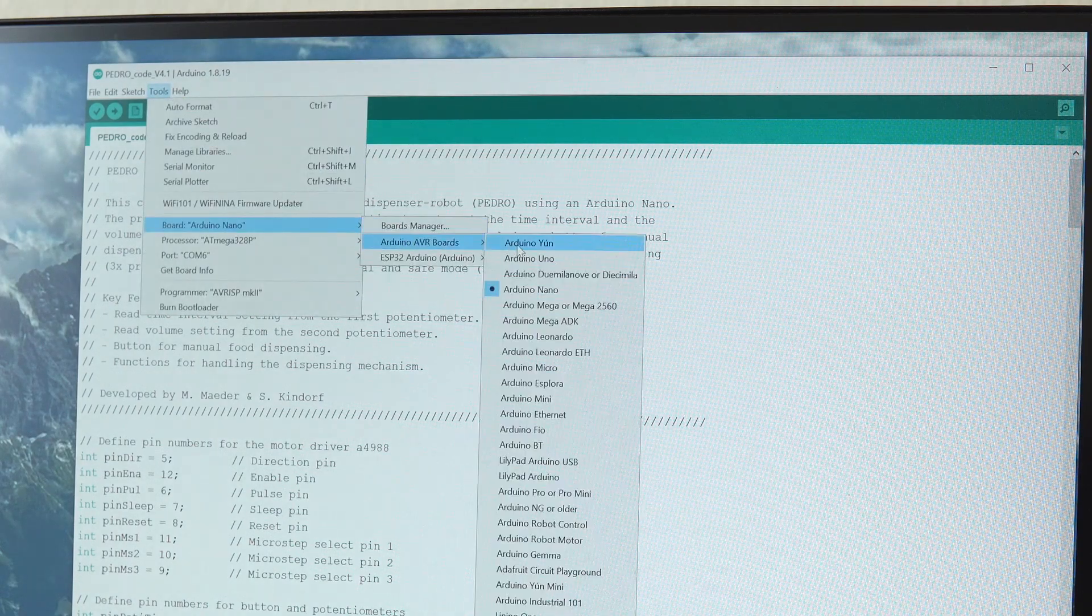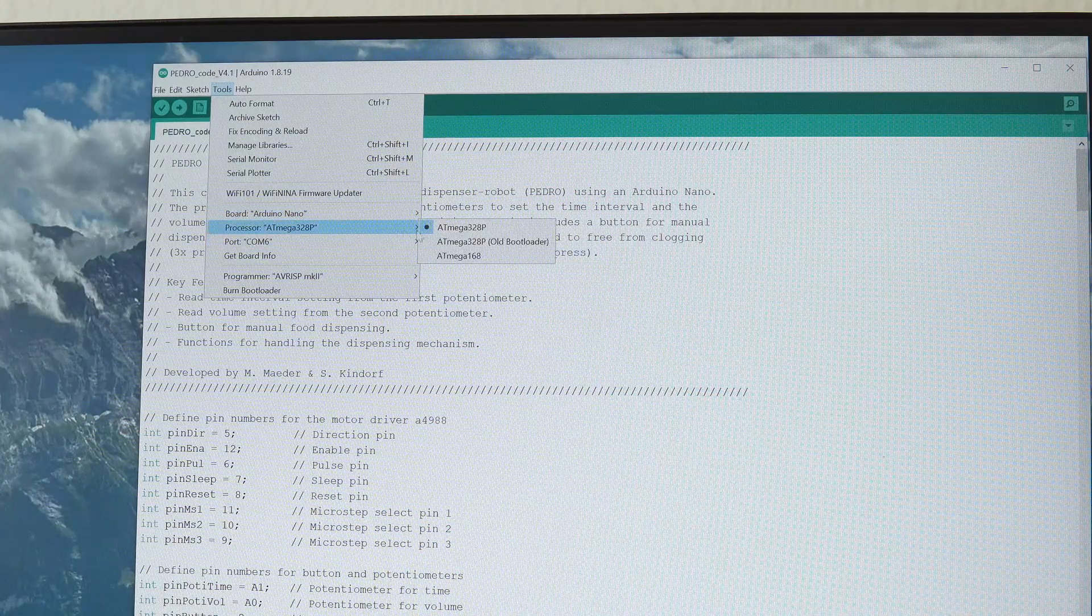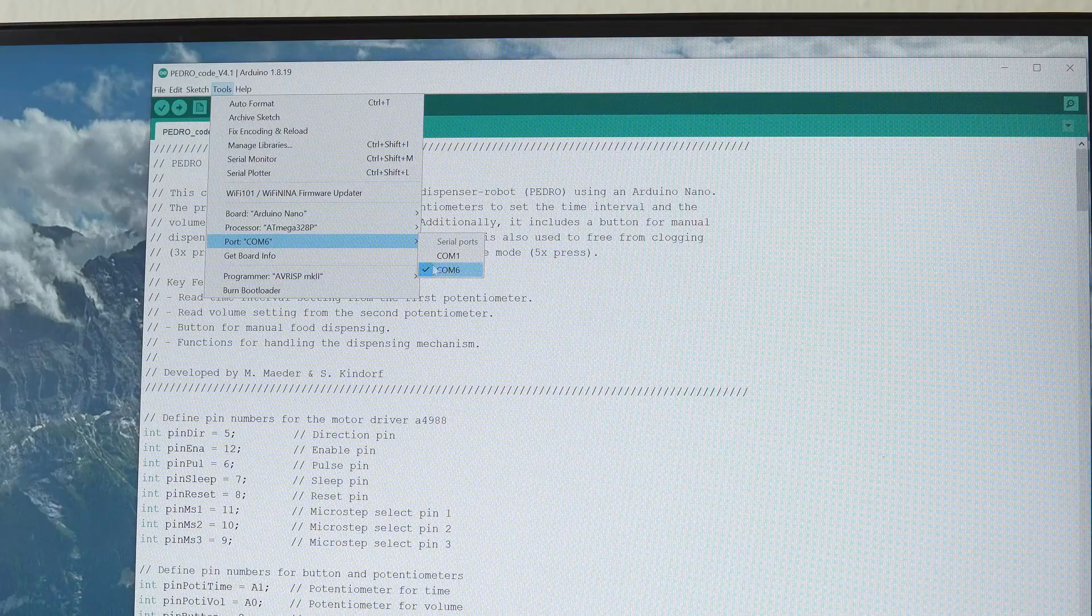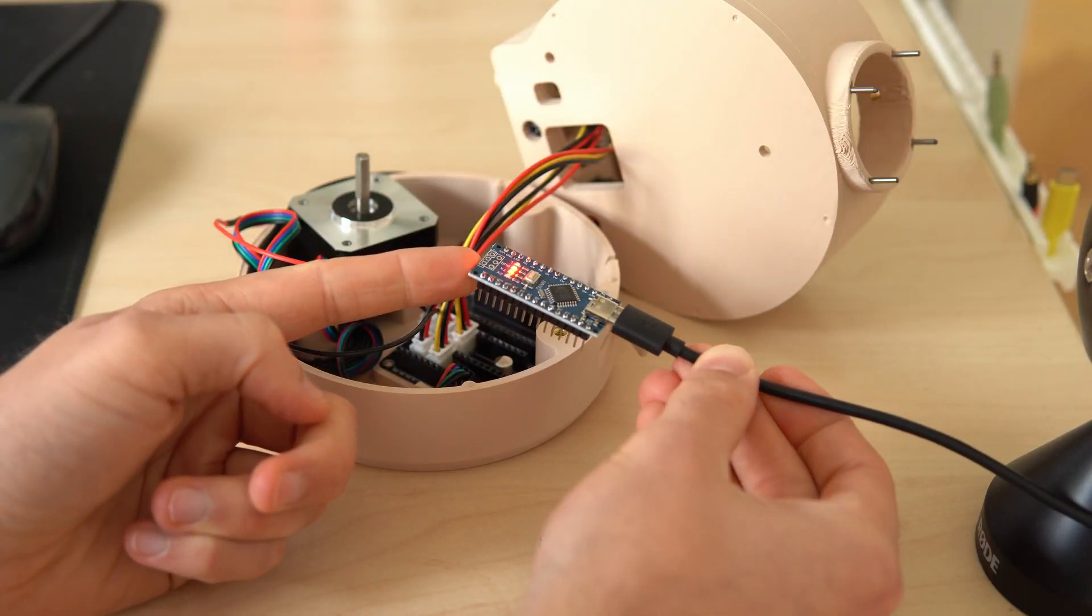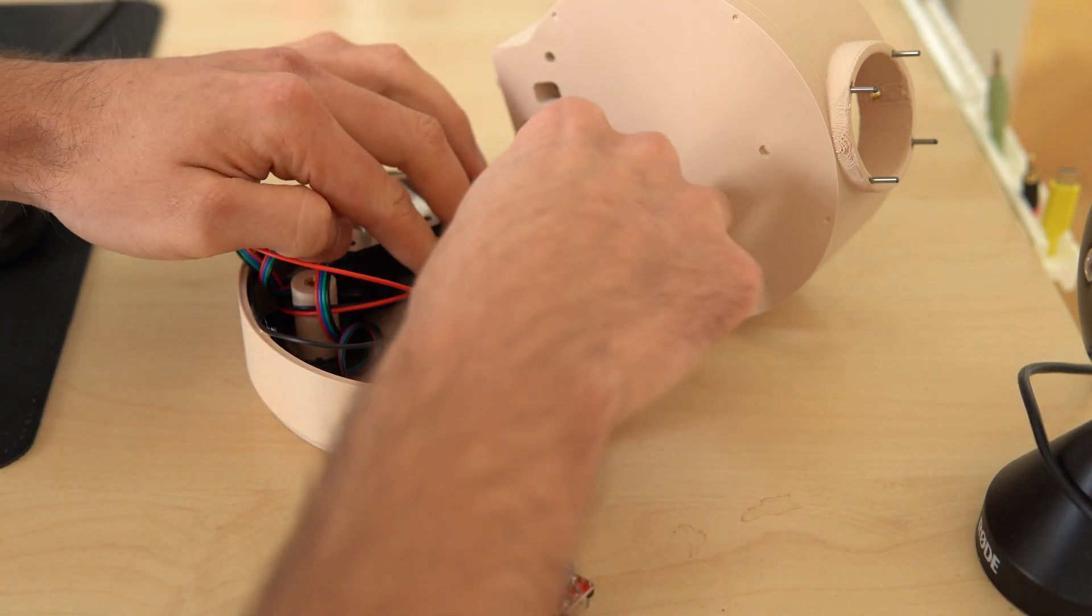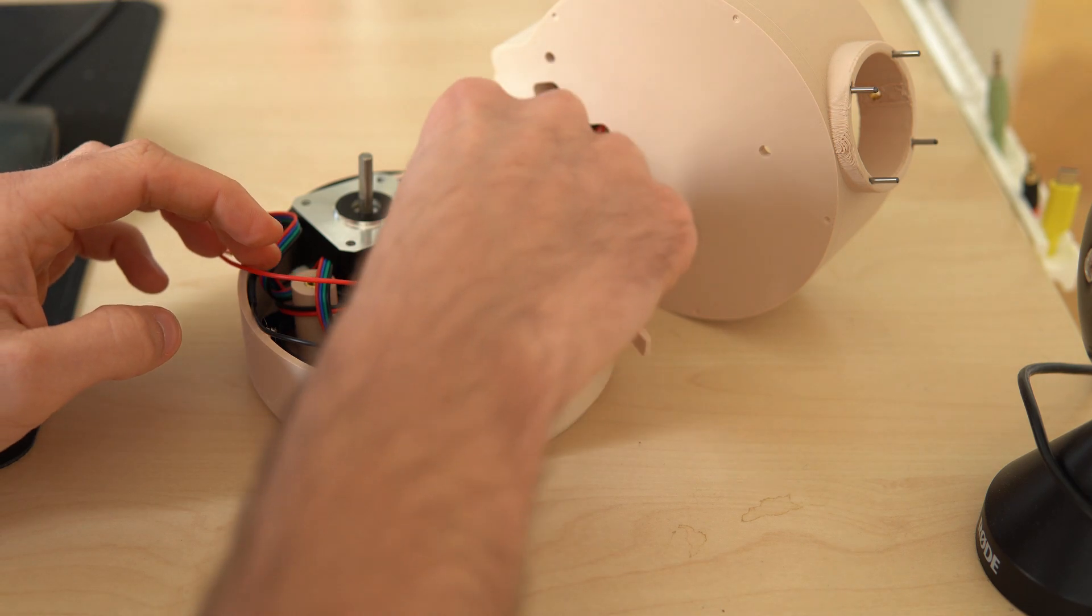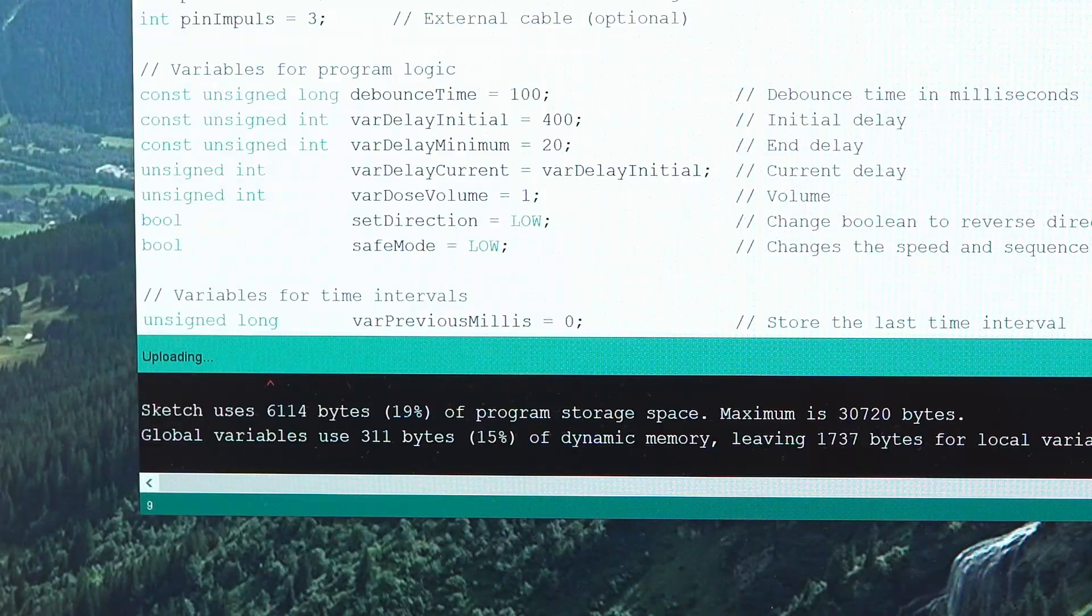Select the right board which is the Arduino Nano, and since this is quite an old controller it can be necessary as well to select the old bootloader. Make sure you use the right USB port and then you're good to go. Sometimes when uploading something to the Nano for the first time, it somehow works more reliably when the controller is not plugged into the board. I don't really know why and it's only for the first time—maybe someone else can explain that to me. Once you did that, you can hit upload and the program will be flashed on the controller.